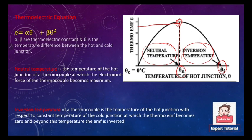The formal definition: the neutral temperature is the temperature of the hot junction of the thermocouple at which the thermo electromotive force becomes maximum. The inversion temperature of a thermocouple is the temperature of the hot junction, with respect to the constant temperature of the cold junction, at which the thermo EMF becomes zero and beyond which the EMF is inverted.